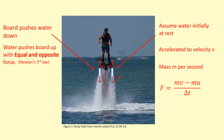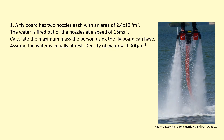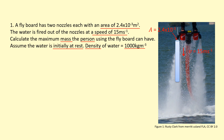In this example, we'll go through the maths behind the flyboard. There are two nozzles, each with an area of 2.4 × 10⁻³ m². Water is being fired downwards at 15 m/s. We need to calculate the maximum mass the person using the flyboard can have. Assume the water is initially at rest and the density of water is 1000 kg/m³. We assume the water fires like a cylinder downwards, with the cross-sectional area equal to the nozzle area of 2.4 × 10⁻³ m².